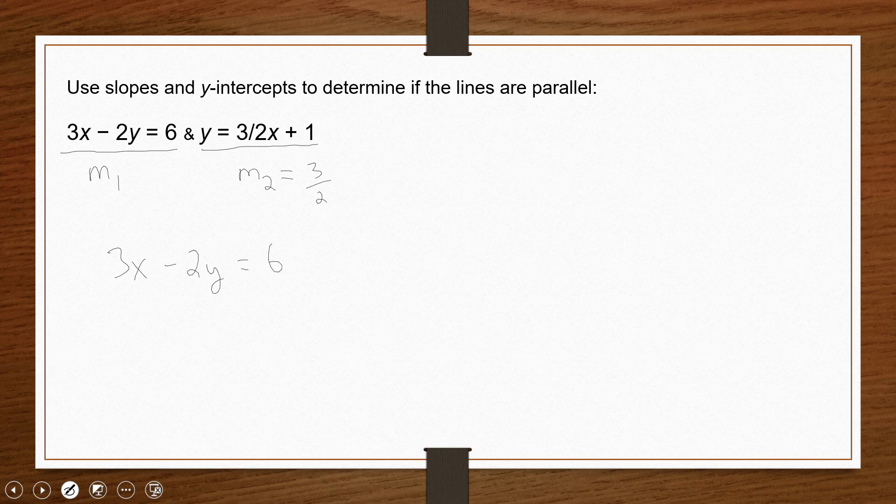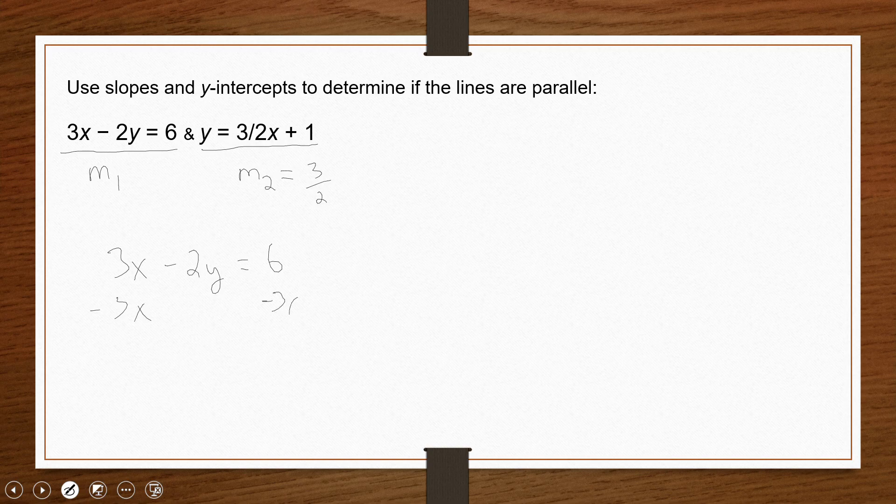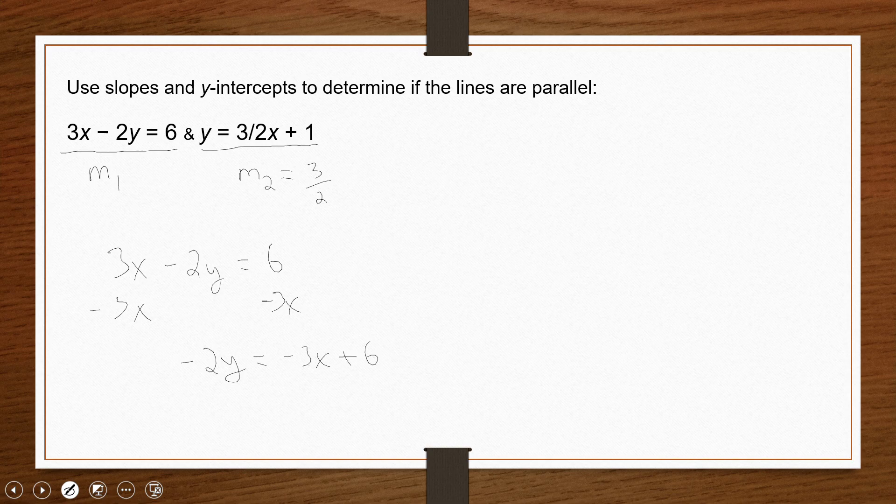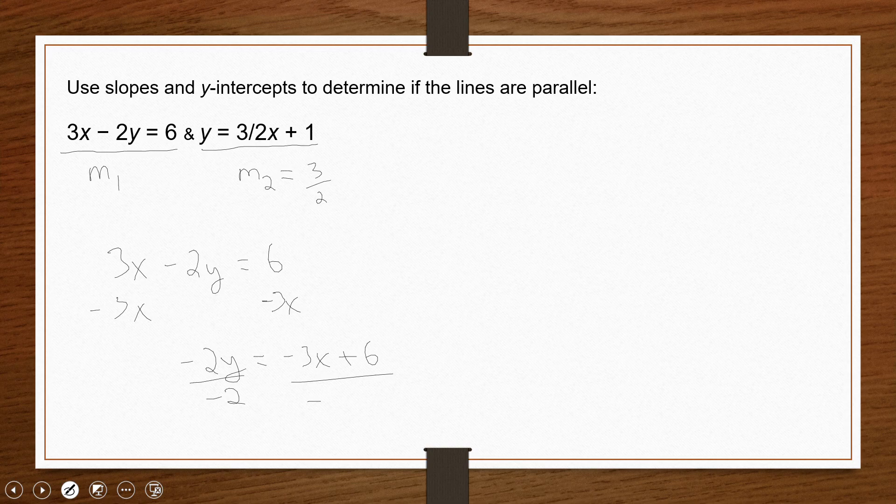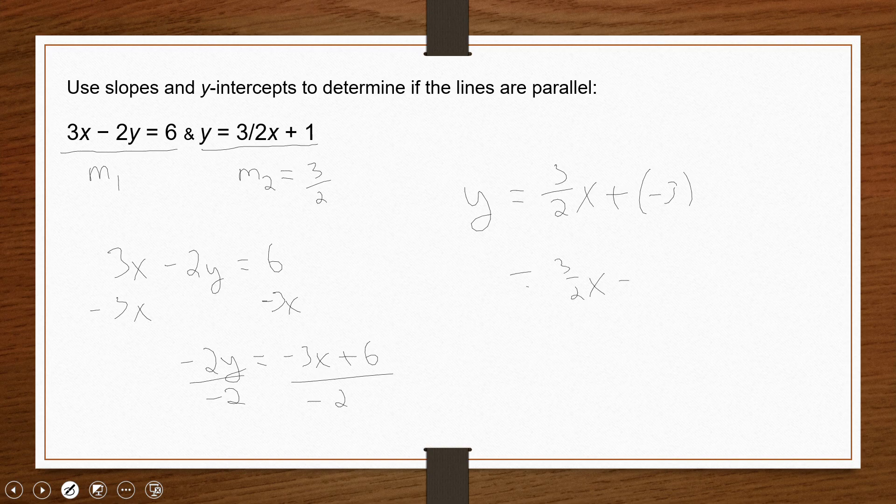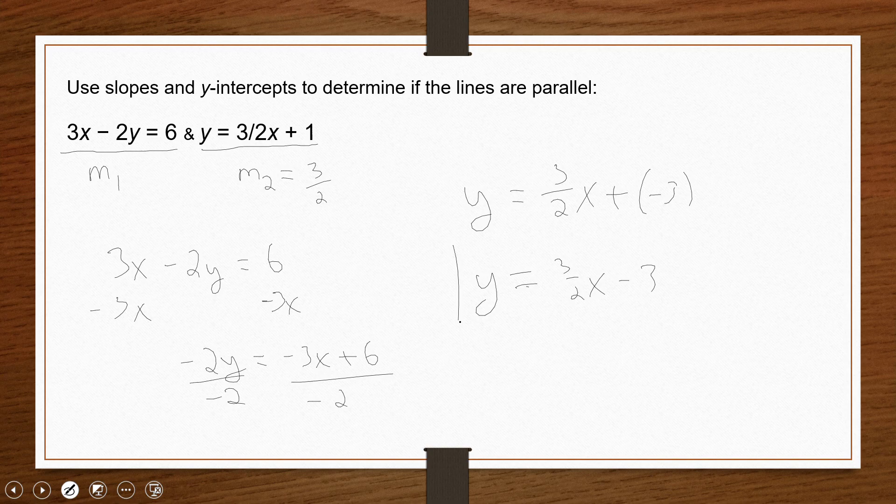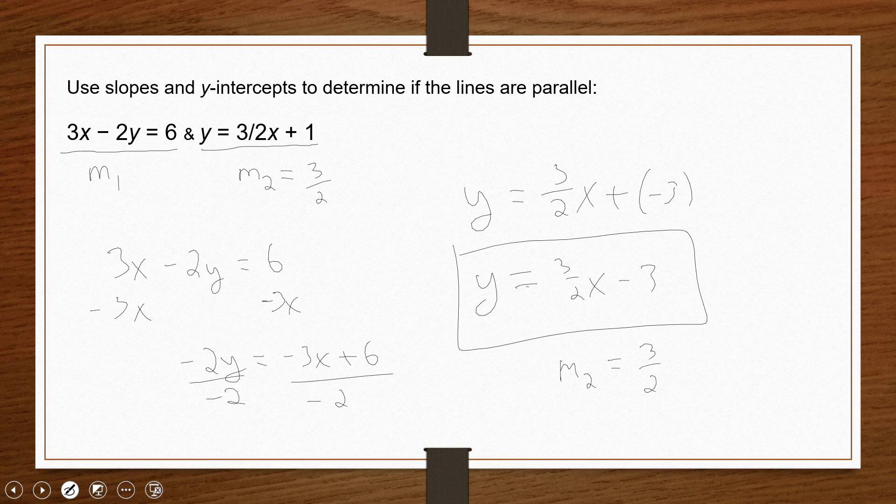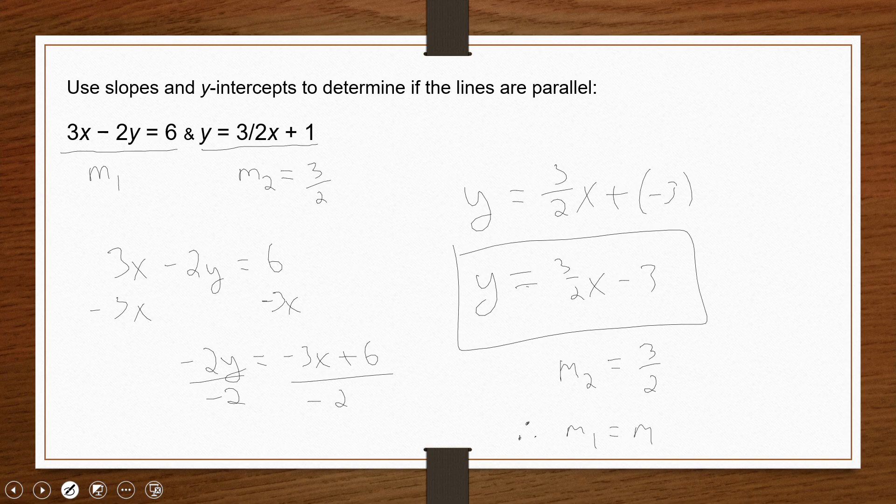We can do so at first by subtracting 3x from both sides. I get negative 2y is equal then to negative 3x plus 6. Divided by negative 2 on both sides I then get the equation y is equal to 3 halves x plus negative 3, and really I should just say 3 halves x minus 3 like this. And so once I have it in this correct form I can see that the slope of my second line is also 3 halves. And since the two lines happen to be the same measure we can in fact say that the two lines are parallel.